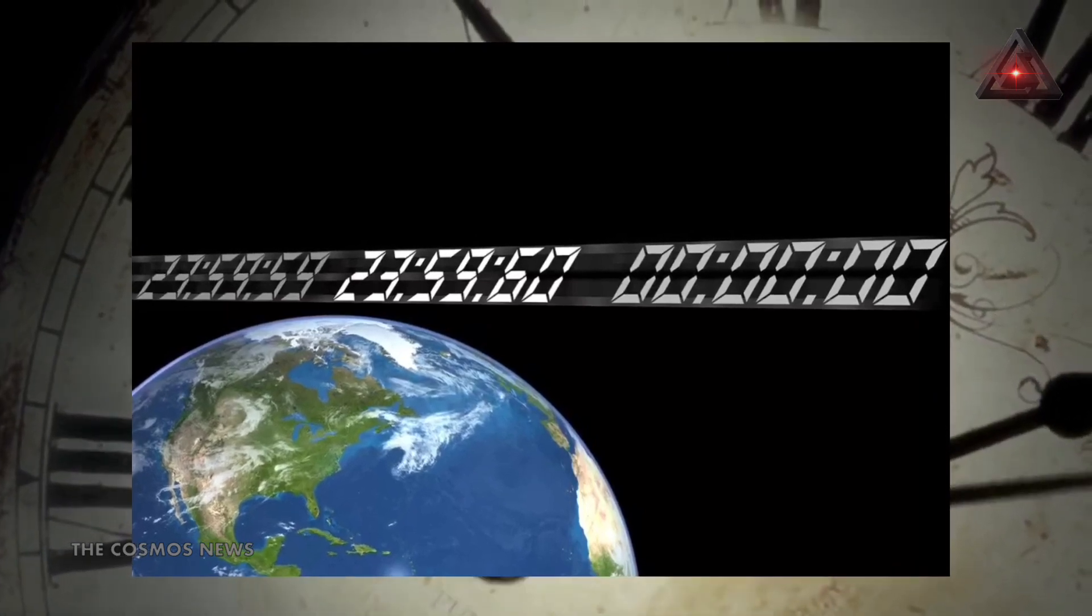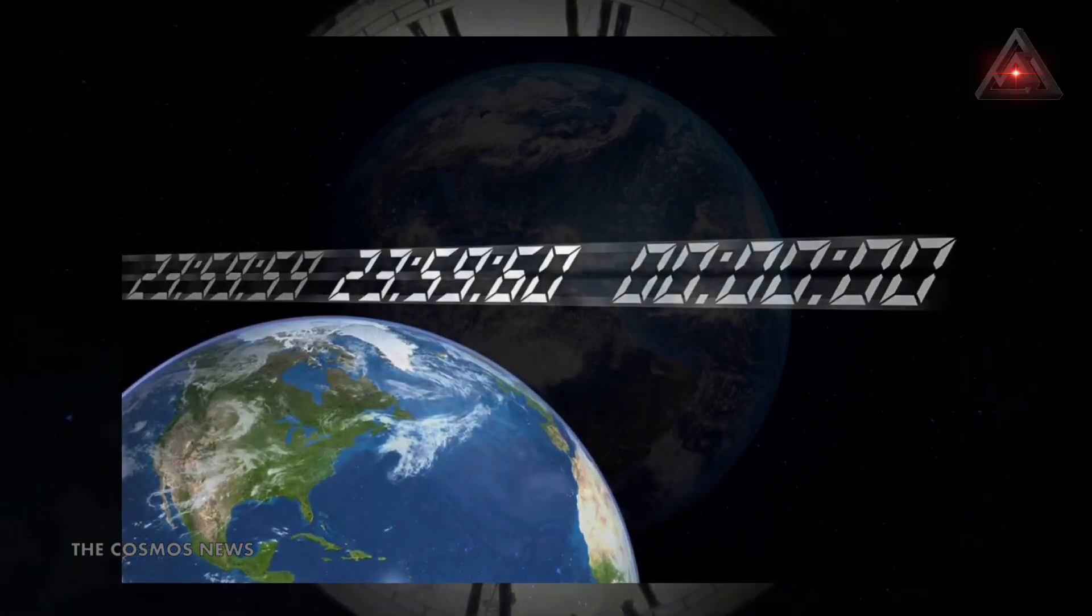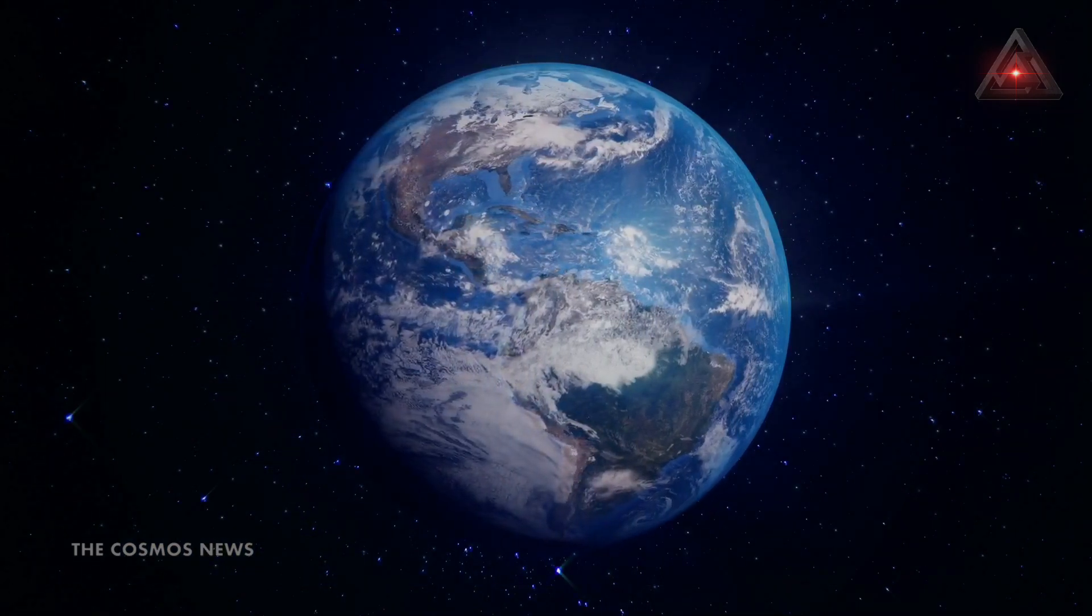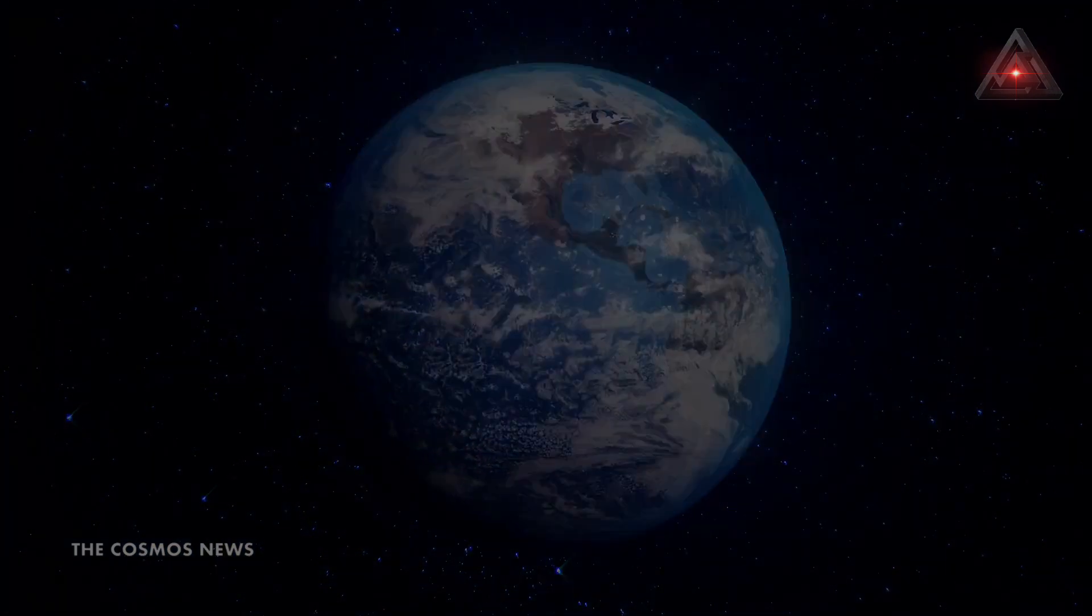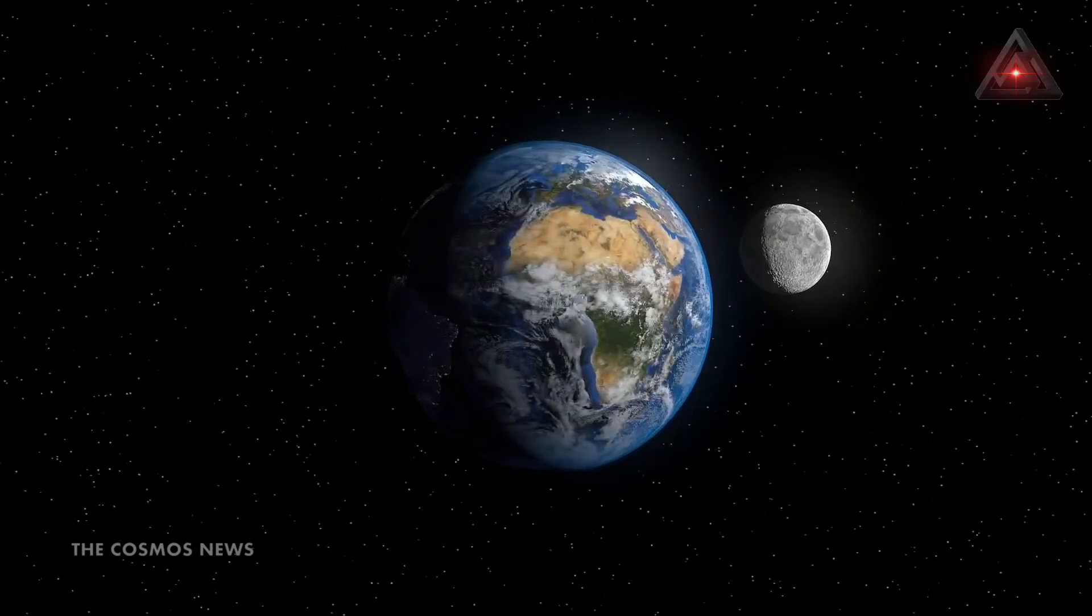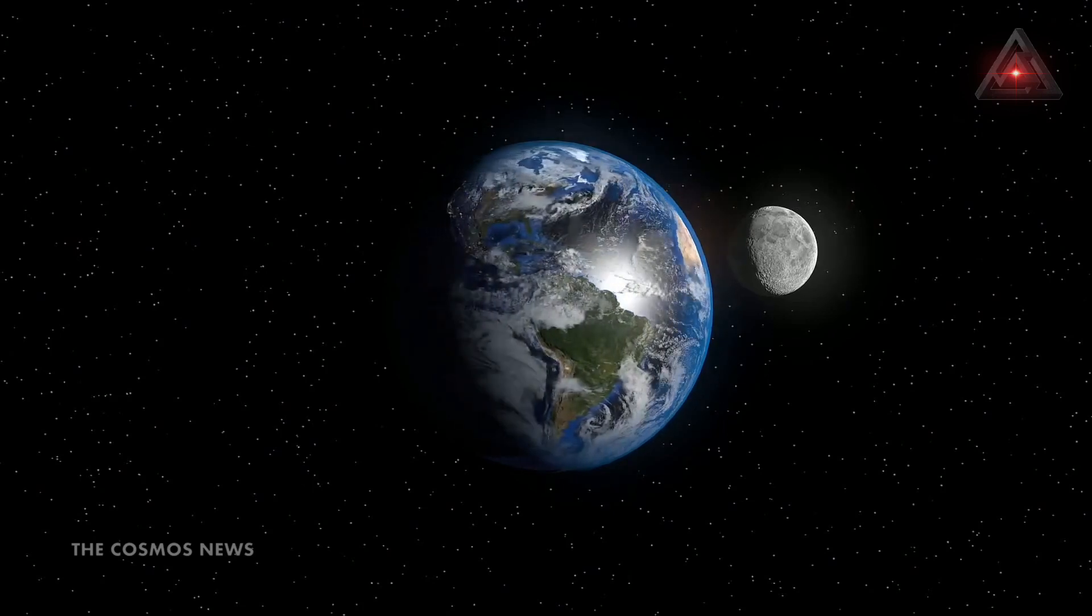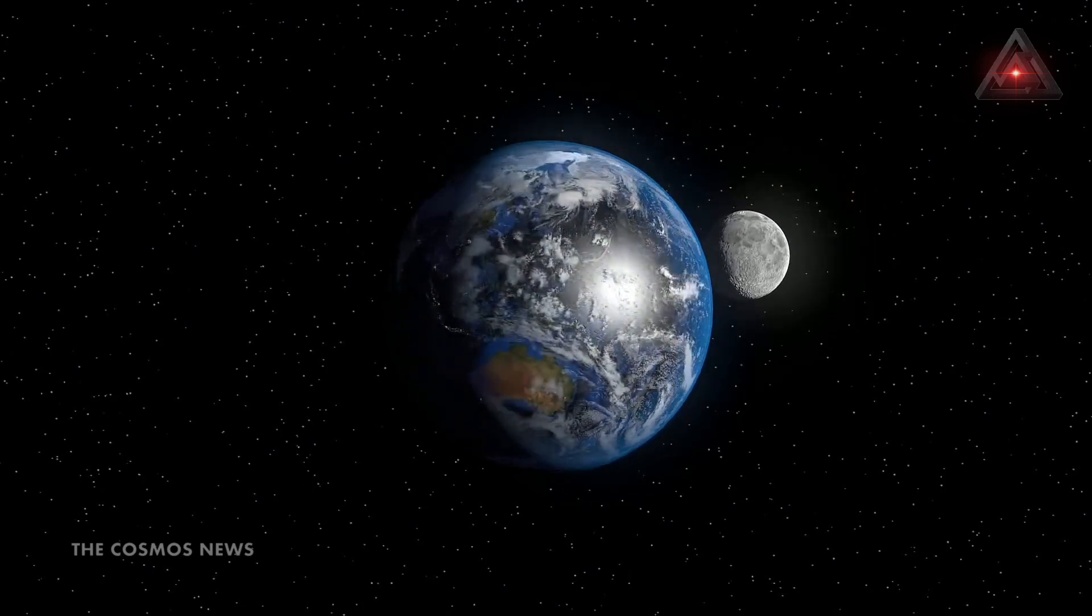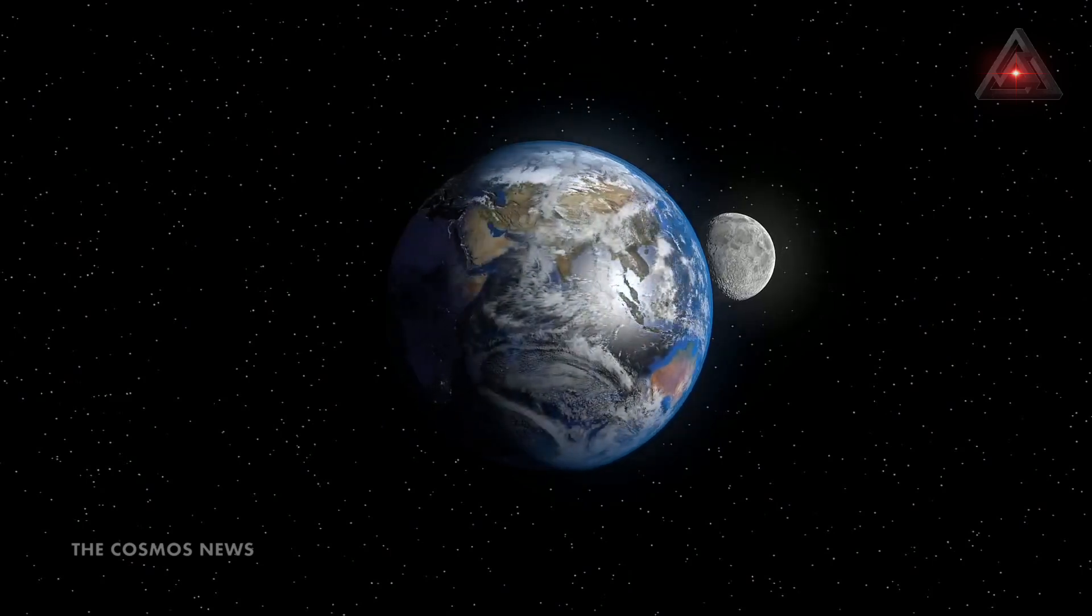That may still be the case over longer lengths of time. The Earth's rotation may still be generally slowing down. After all, the Earth's rotation is being slowed down over time by the moon. Tides are produced by the moon's gravitational pull, and the Earth's orbital path around the Sun is slightly elliptical.